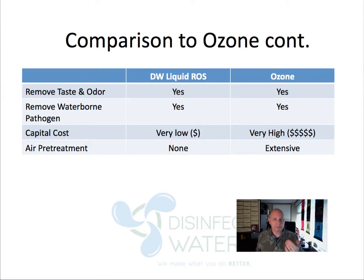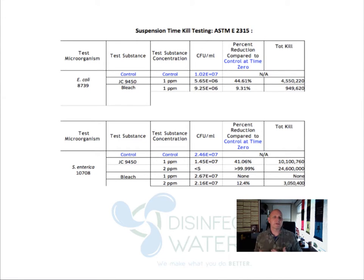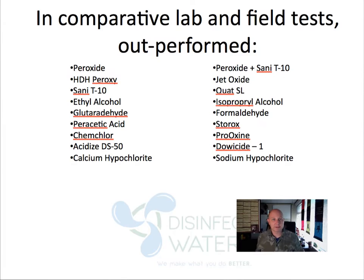It's quite amazing, and there's no air pre-treatment required. We are also very effective at killing microorganisms like E. coli and Salmonella enterica. This is a comparison showing that at one to two parts per million, our kill rate is extremely high — much higher than bleach, which is what most people are currently using. We are more effective than bleach and significantly more cost effective. In lab and field tests, we've outperformed peroxide, peracetic acid, ethyl alcohol, and other products currently in use. We actually work better, including against formaldehyde and mold in applications like the food industry.